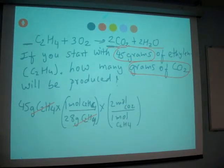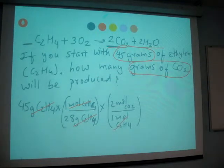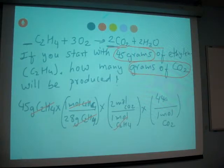We cancel moles of ethylene and get moles of CO2. Now we have moles of CO2. When we multiply by molar mass, the molar mass of CO2 is 44 grams per mole.